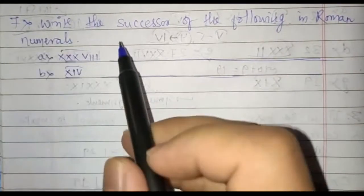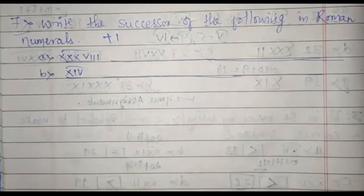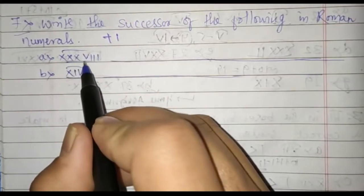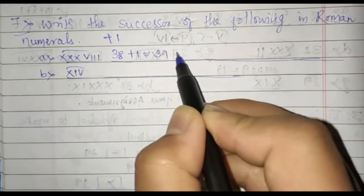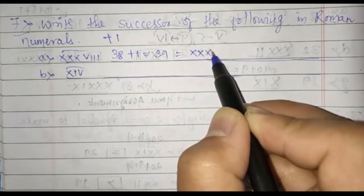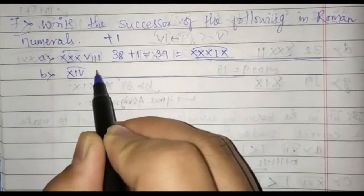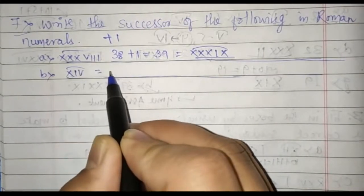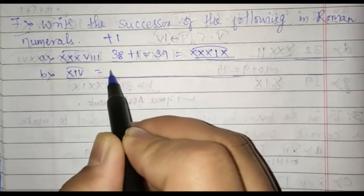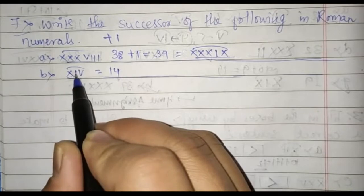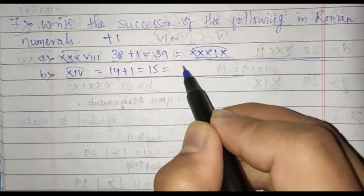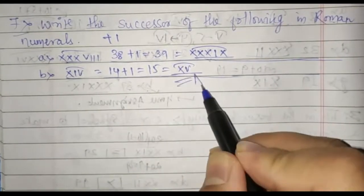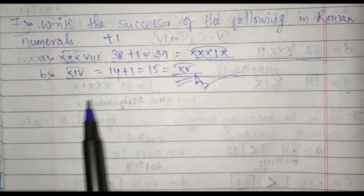Proceeding further to question number 7: write the successor of the following in Roman numeral. Successor means plus 1 to the given number — add 1. So XXXVII means 38, right? Plus 1 gives 39. If you have to write 39 in Roman form, it is XXXIX. Similarly, the next Roman numeral converts to Hindu-Arabic as 14, because X is 10 and 10 plus 4 is 14. So 14 plus 1 equals 15, and 15 is written as XV. This is the correct successor of the following Roman numeral.